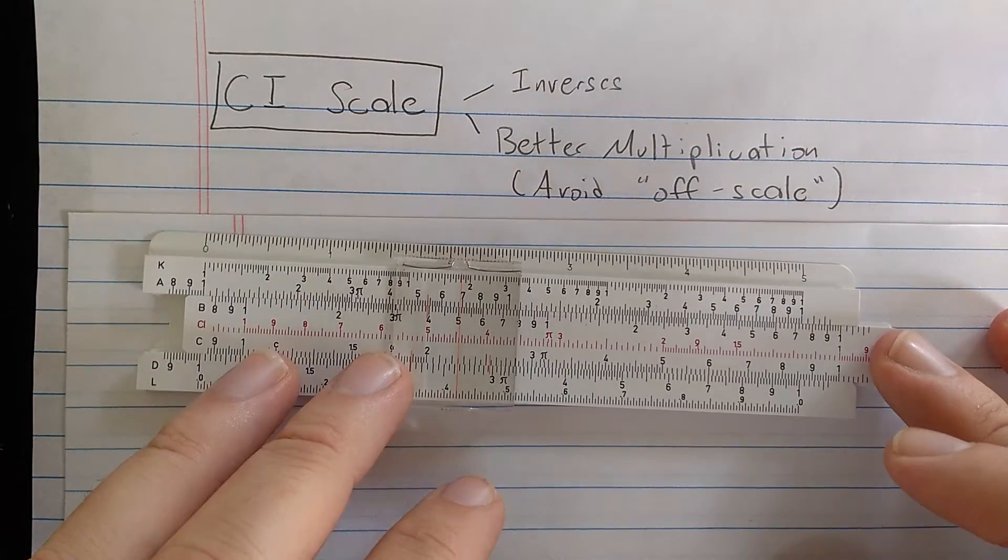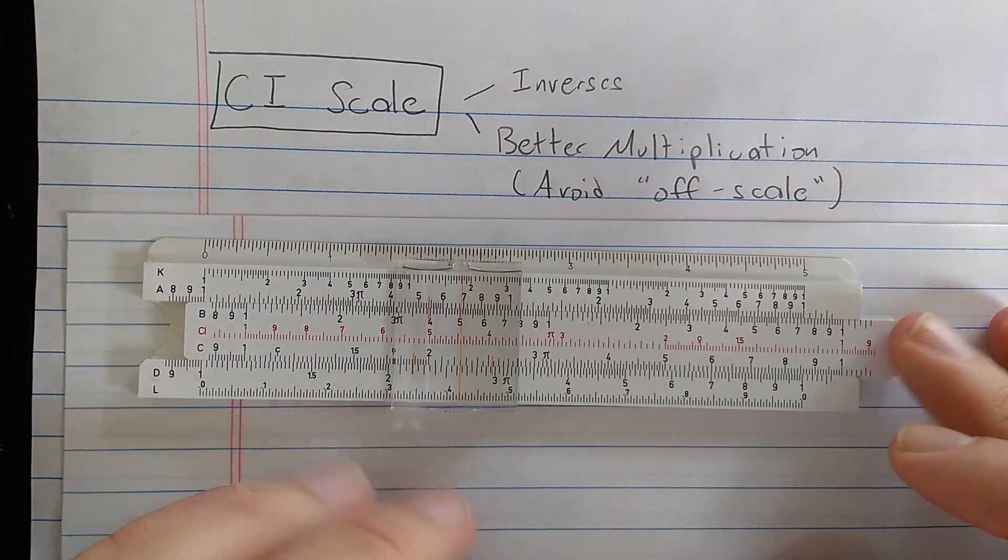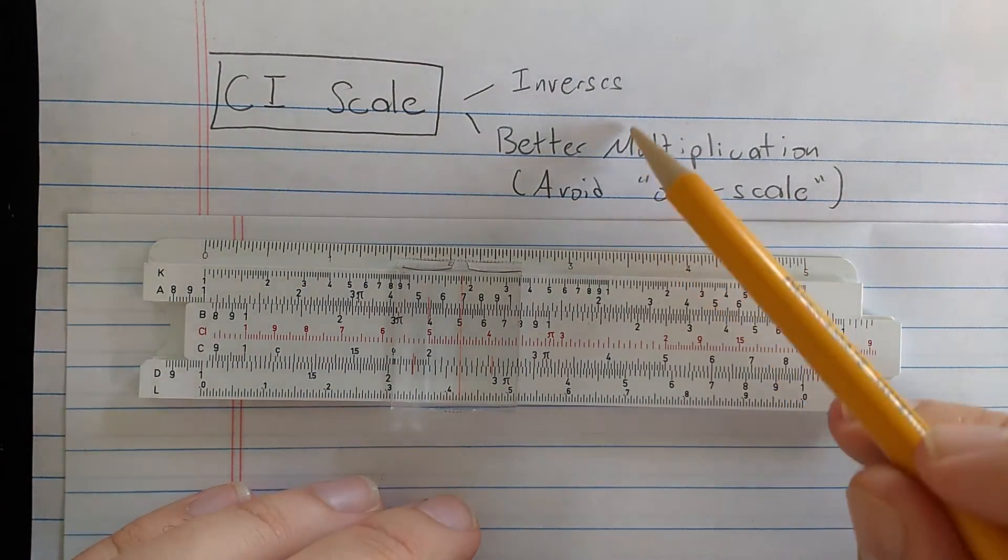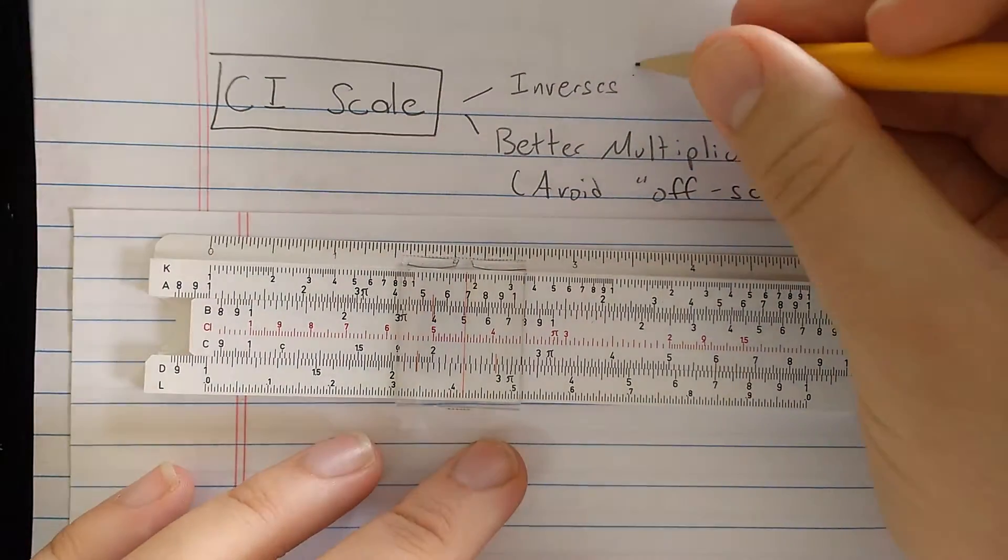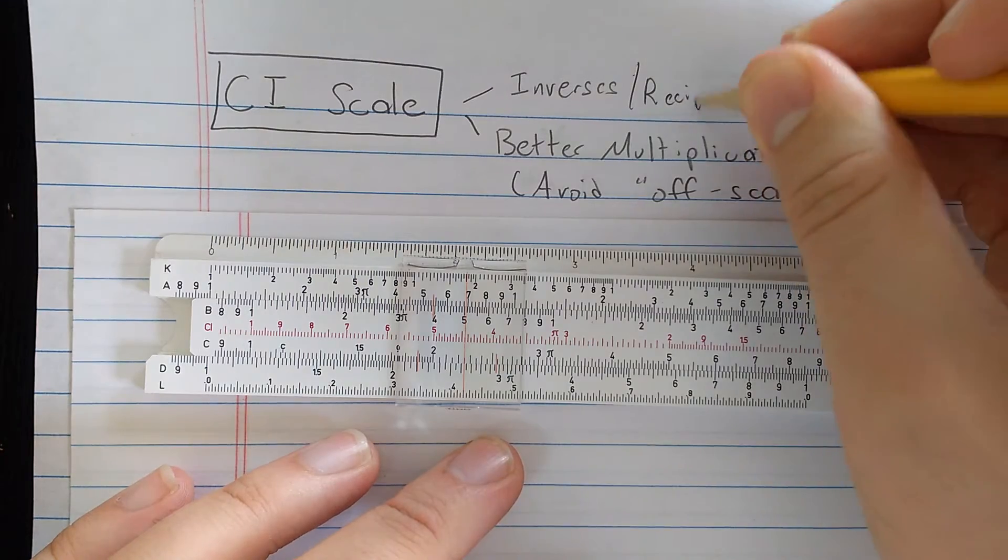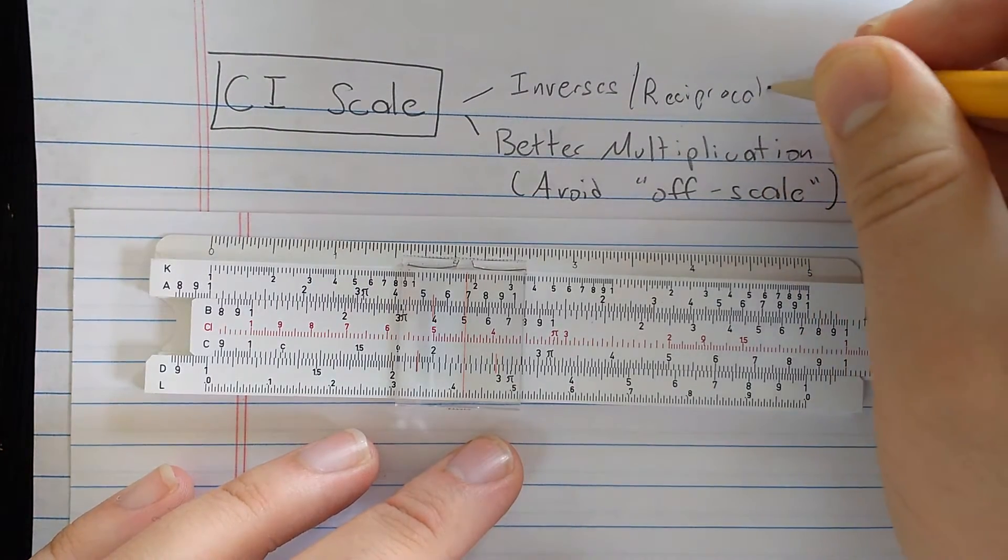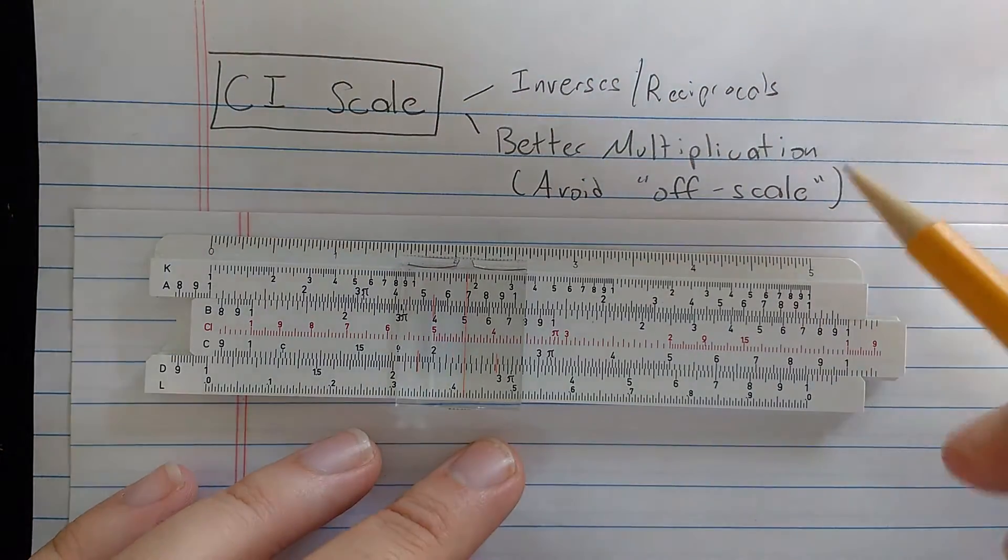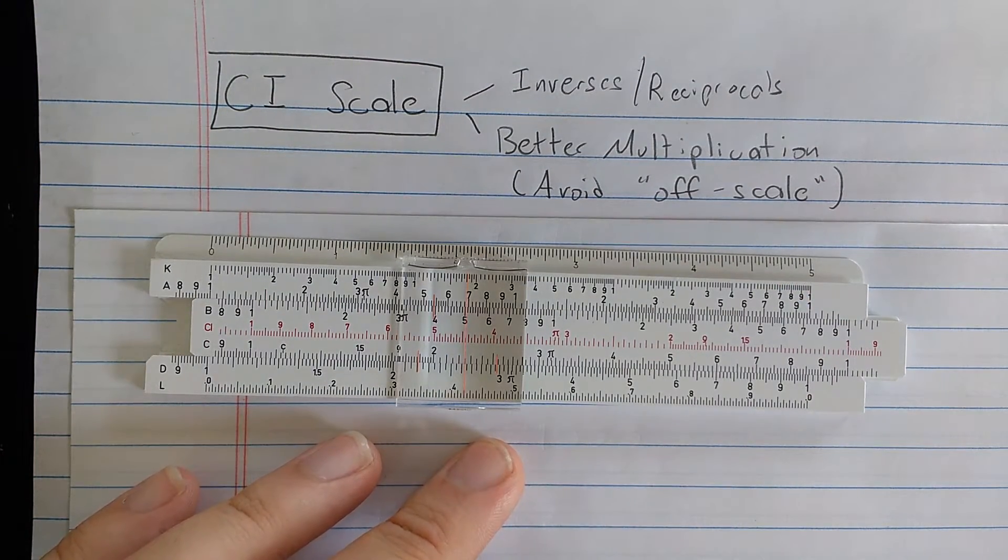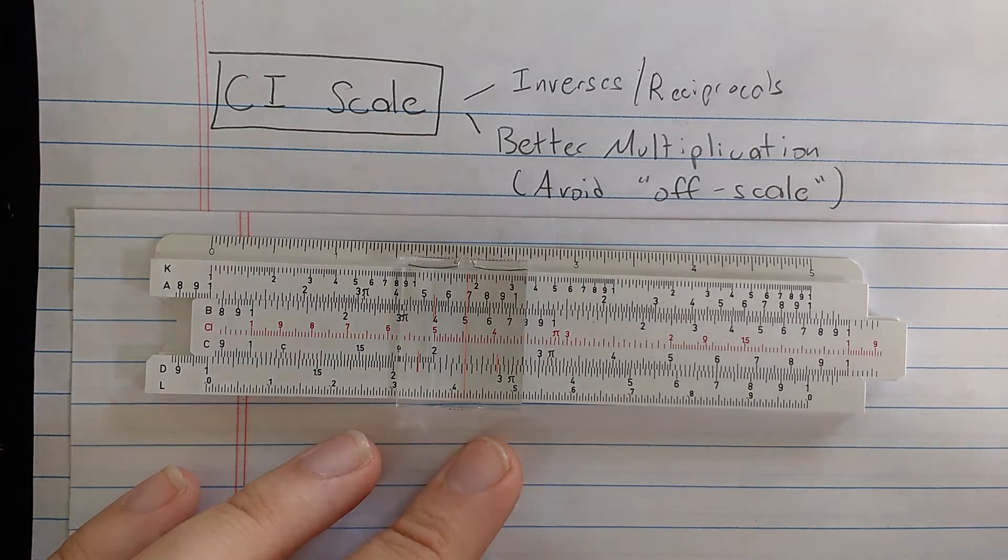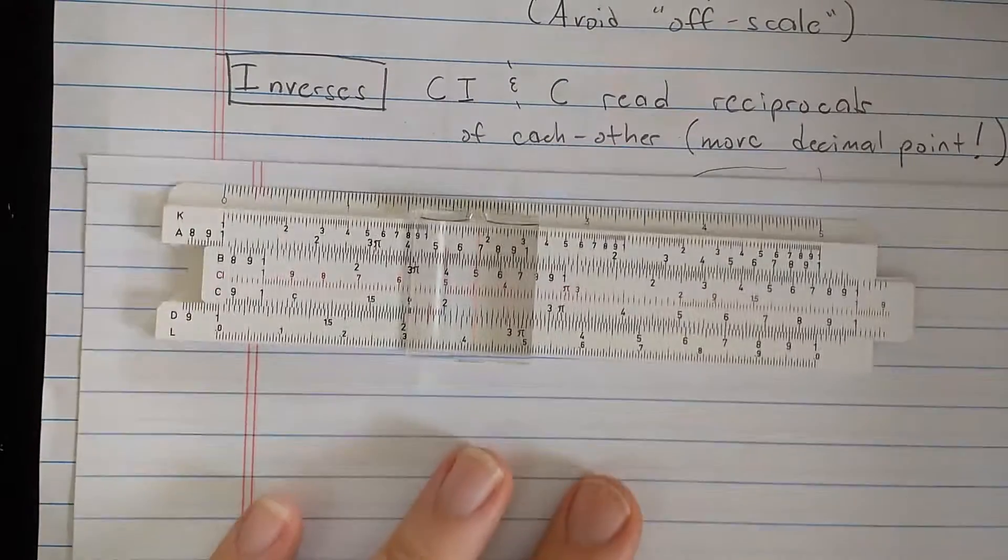There are essentially two uses of the CI scale on the basic slide rule. One is for computing inverses or reciprocals, multiplicative inverses. Second use is a better way to do multiplication which avoids the off-scale problem that we saw in the last video. Let's see how we can do this.